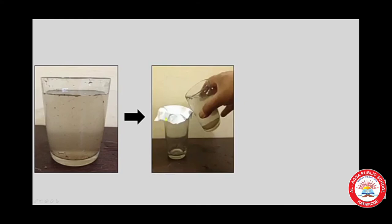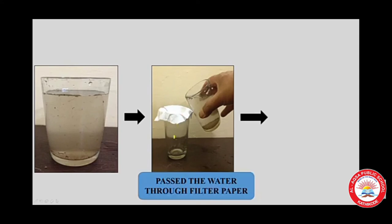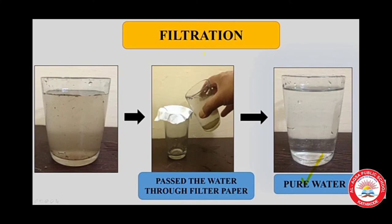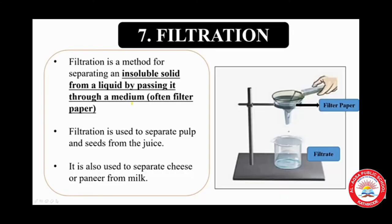To separate these finer impurities, take another glass and place a filter paper at the top. A filter paper is a paper that has fine pores — pores means holes. The mixture is then poured onto the filter paper. Solid particles do not pass through it and remain on the filter, and we get clear, pure water in the glass. This process is called filtration.